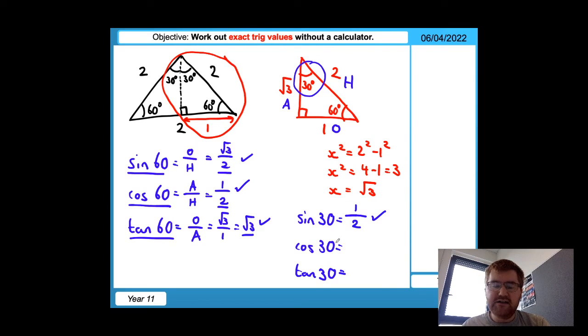Cos 30, well that's equal to adjacent, which is root three, divided by two. And then tan 30, that's equal to opposite, which is one, divided by the adjacent, which is root three. And that gives me my last exact value. So sine 30 is a half, cos 30 is root three over two, and lastly, tan 30 is equal to one over root three.